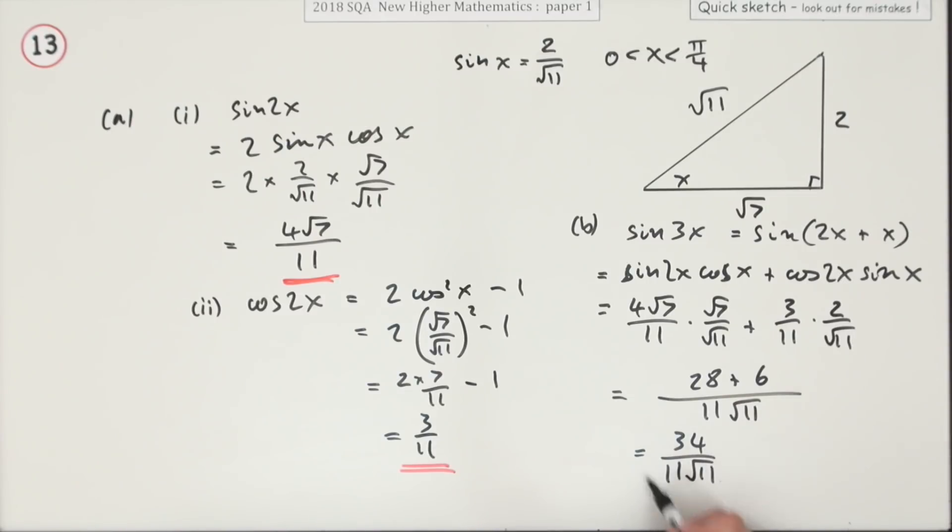But do they want it that way? I don't know. Do they want you to rationalize that denominator? Multiply the top and bottom by root 11, because then if you did that it would be 34 root 11 on top and your 11 times 11 is 121 underneath. I'm feeling they'll probably just let you settle with that, that one.